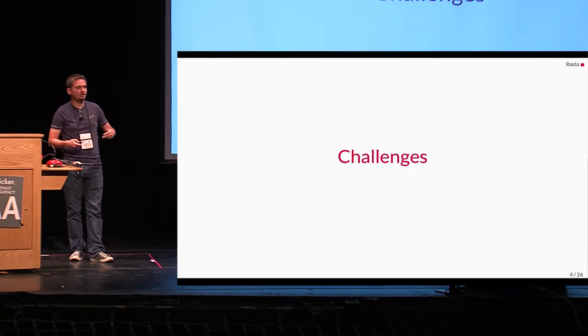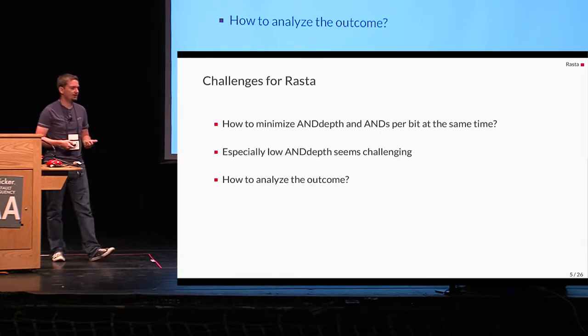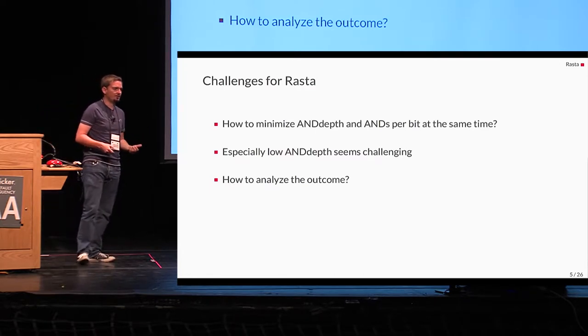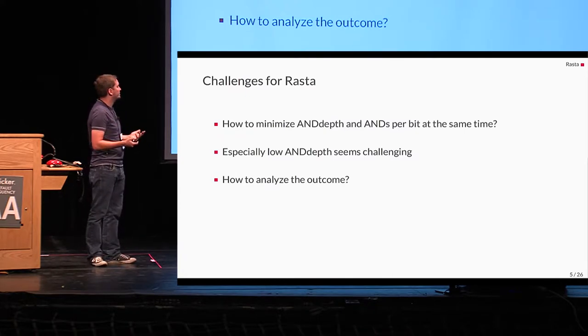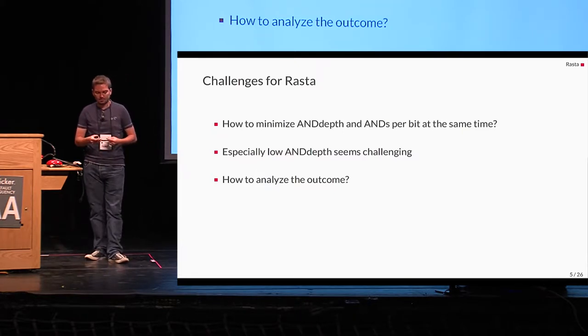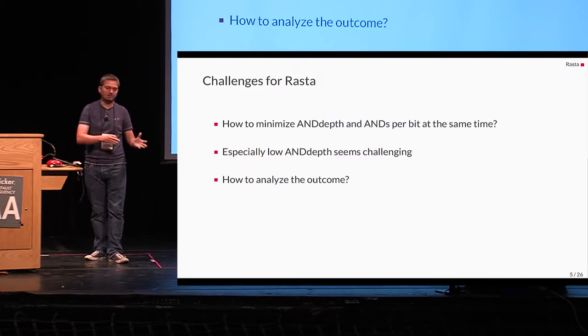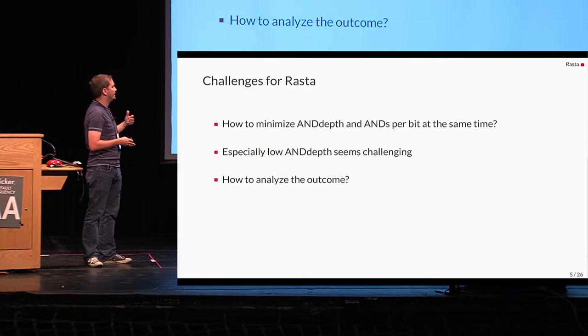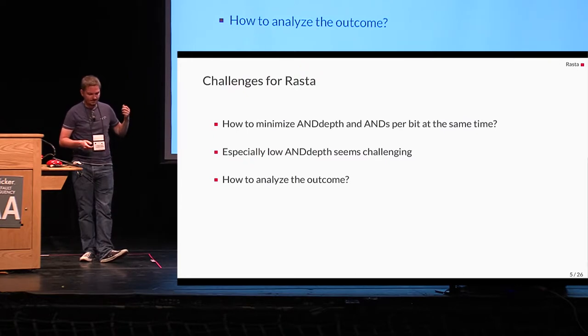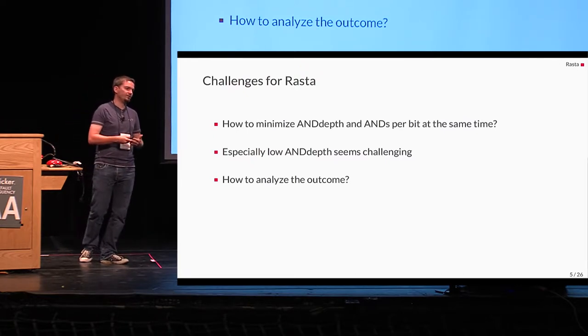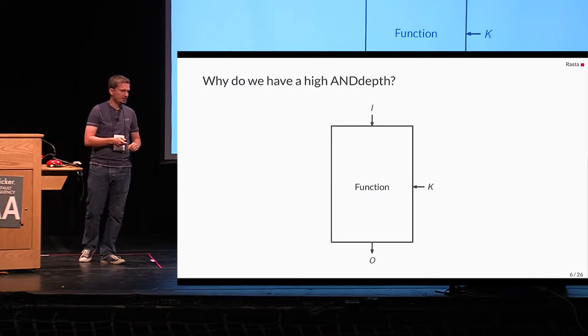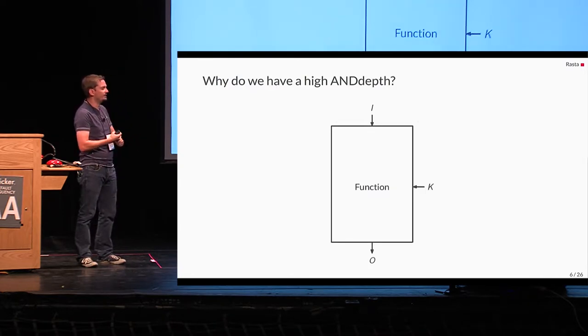So, clearly during the design we faced some challenges and the first challenge we had is how to design such a thing. How to design a cipher which minimizes ANDdepth and ANDs per bit at the same time because to the best of our knowledge such a construction has not existed before. So, it's likely that we might deviate from the classical design strategies. And especially in this case the low ANDdepth seems challenging to us. And then if we came up with the construction with the design then we face the problem how to analyze the outcome and how to argue about its security.